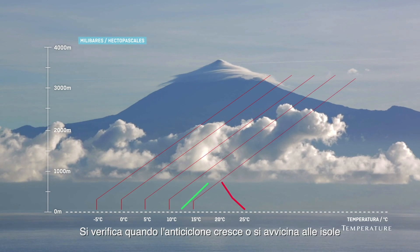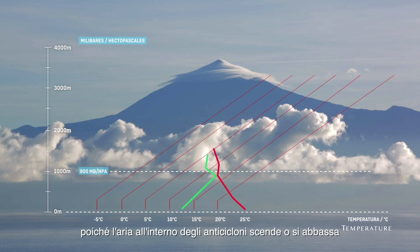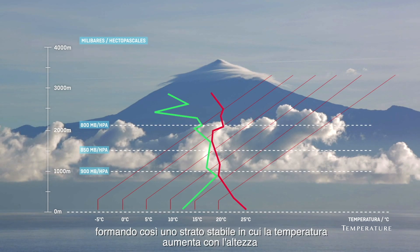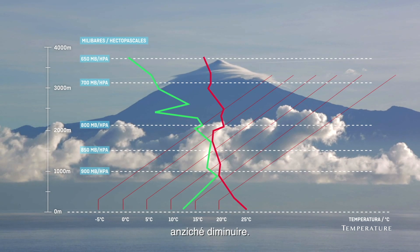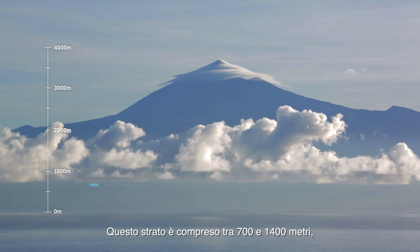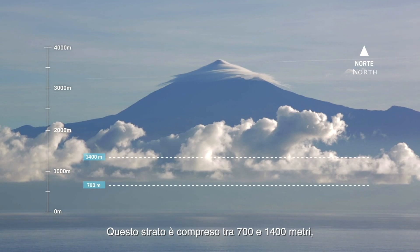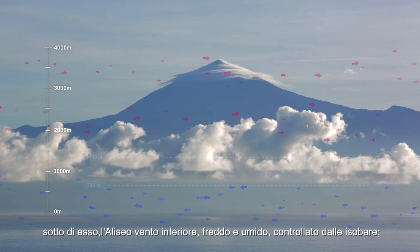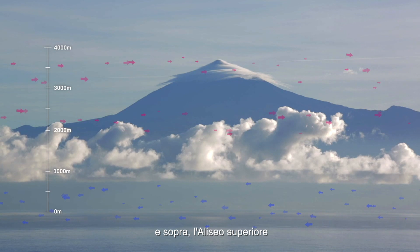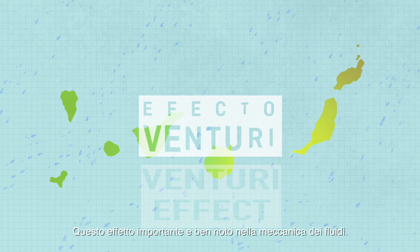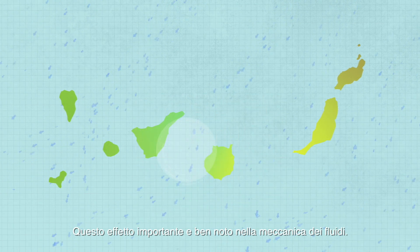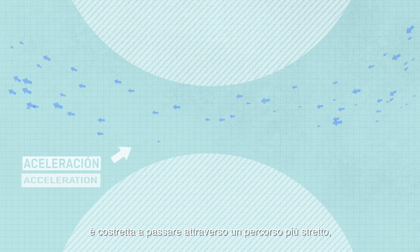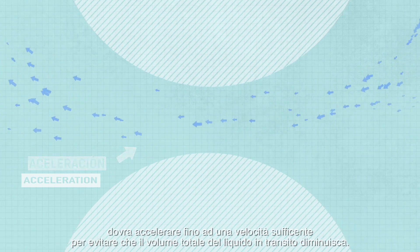This occurs when the anticyclone grows or approaches the island, since the air inside anticyclones descends or subsides, generating higher temperature caused by increased pressure, thus forming a stable layer where temperature increases with height instead of decreasing as would be expected. This layer, which ranges between 700 and 1400 meters, delimits two different air currents: below it, the cool humid lower trade wind controlled by the isobars, and above it, the warm dry upper trade wind. In fluid dynamics, when a particular amount of fluid is forced to pass through a narrow constriction, it will accelerate to prevent the total fluid volume from decreasing.